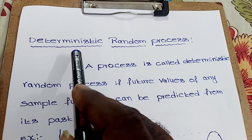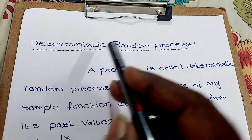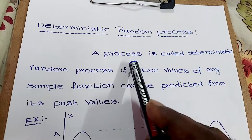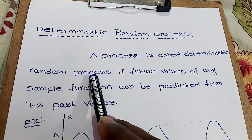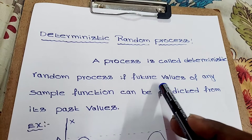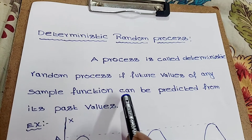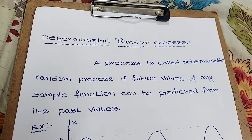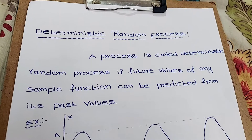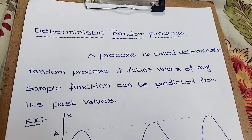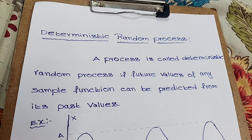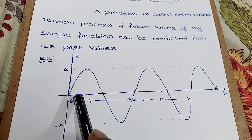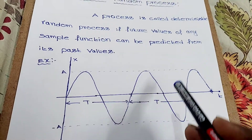Today our topic is deterministic random process. A process is called a deterministic random process if future values of any sample function can be predicted from its past values.